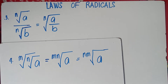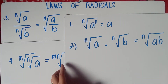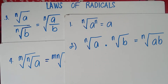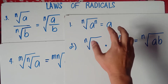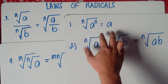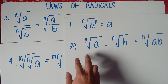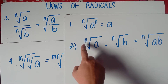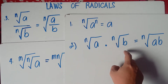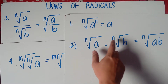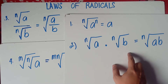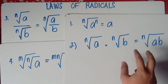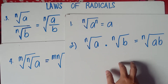This is already Part 2 of our video class. In Part 1, we solved numbers 1 and 2 rules. We have the nth root of a raised to the power of n is equivalent to a. And for number 2, we have the product rule: the nth root of a multiplied by the nth root of b — if they have the same index, simply copy the index and multiply the radicands a and b.